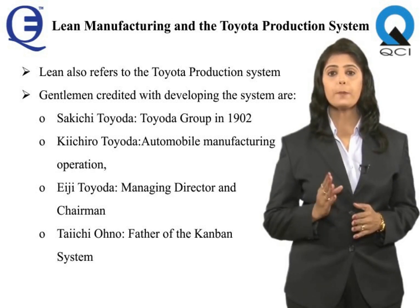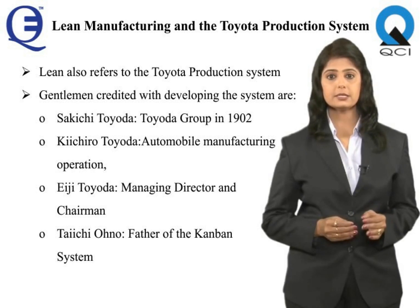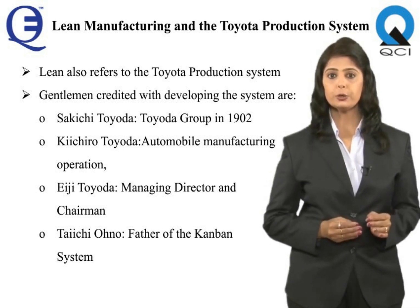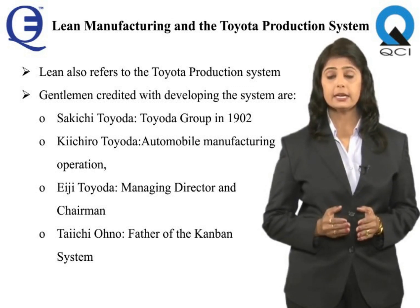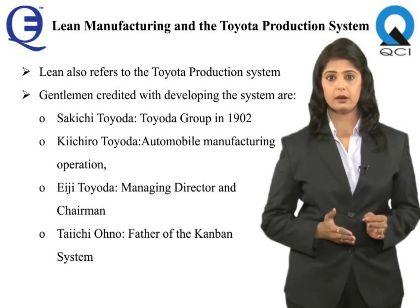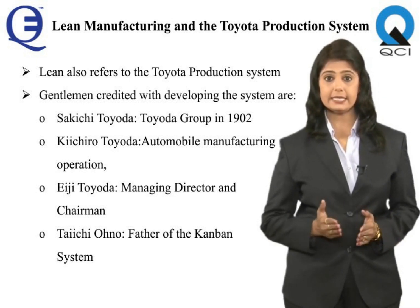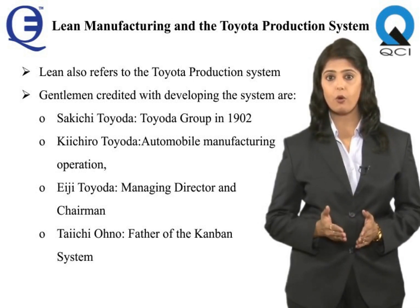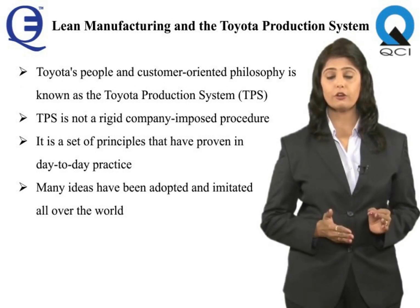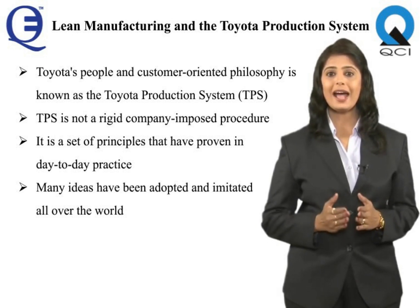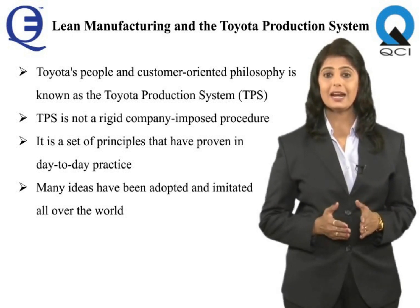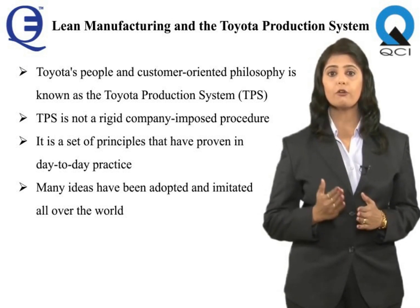Within the organization, four prominent gentlemen are credited with developing the system: Sakichi Toyoda, who founded the Toyota Group in 1902; Kiichiro Toyoda, son of Sakichi, who headed automobile manufacturing between 1936 and 1950; Eiji Toyoda, managing director between 1950 and 1981 and chairman between 1981 and 1994; and Taiichi Ohno, the father of the Kanban system. The practical expression of Toyota's people and customer-oriented philosophy is known as the Toyota Production System (TPS) — not a rigid procedure but a set of principles proven in day-to-day practice over many years.